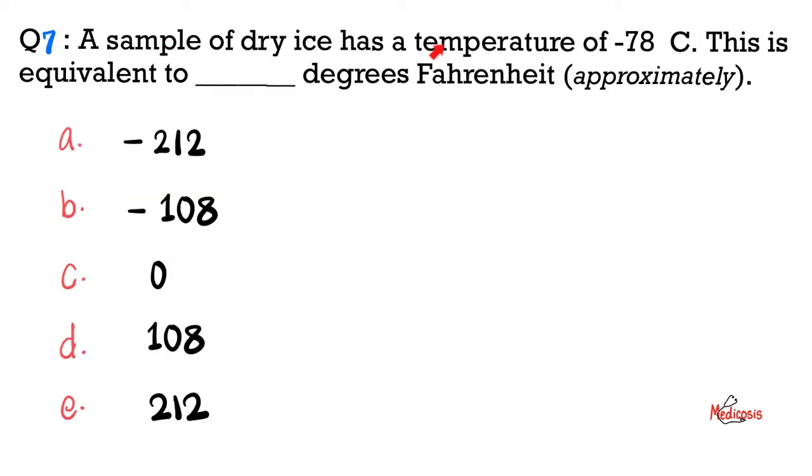Next, we have a sample of dry ice, a temperature of negative 78 degrees Celsius. This is equivalent to blank degrees Fahrenheit. Let's go. So I have the temperature in Celsius, which is negative 78. Fahrenheit is that negative 78, and then you multiply it by 9 over 5. And before you know it, you add 32. And this gives me a final answer of negative 108.4 degrees Fahrenheit. So the answer is, well, what's the closest thing? B.